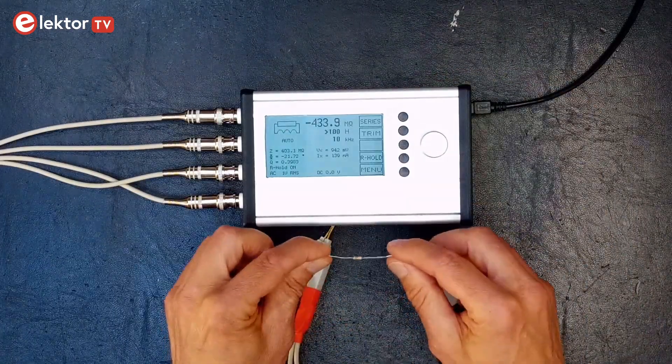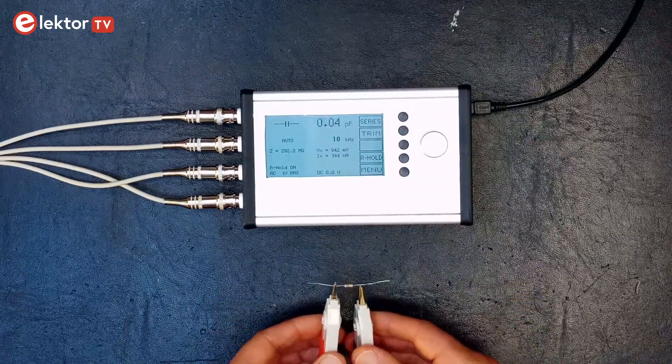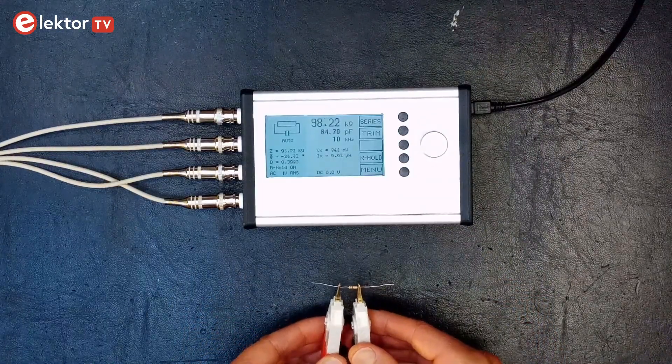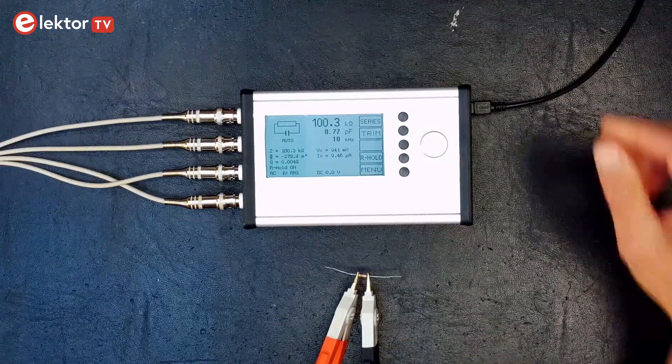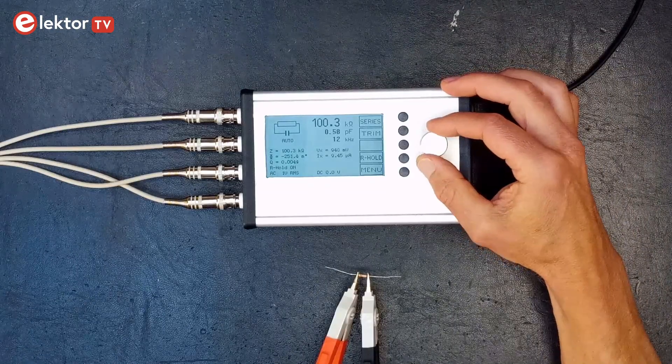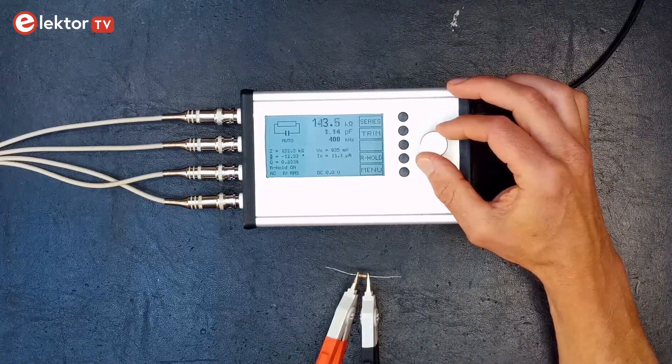Finally, I did the same thing again for a standard quarter watt 100k 5% resistor of unknown origin, like the one that you too will probably have in a drawer or box somewhere. Because it is a resistor, the LCR meter will not allow a DC bias voltage nor current and so I did only one run.